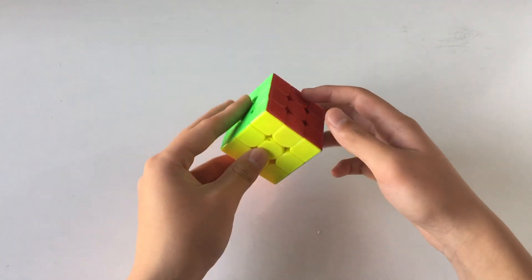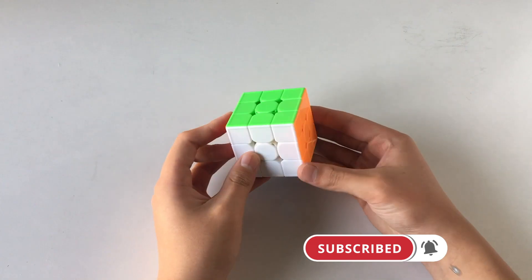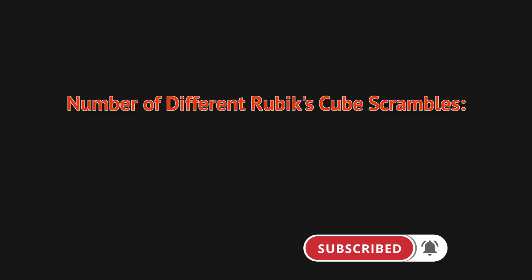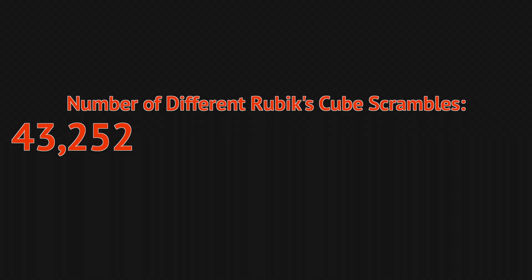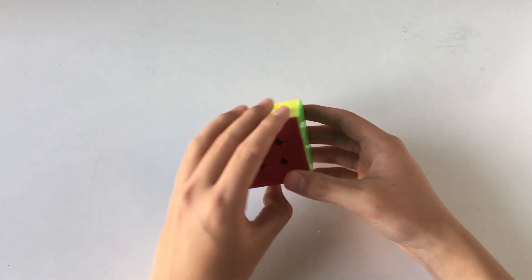Hey everyone, in today's video I'm going to be guiding through the process of how we got the number of Rubik's cube scrambles that the Rubik's cube can have, which to be precise is 43 quintillion, 252 quadrillion, 3 trillion, 274 billion, 489 million, and 860 thousand. So let's get right into this.